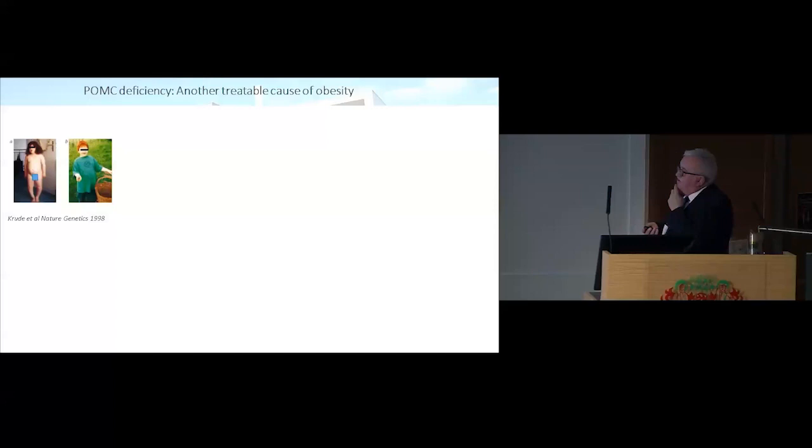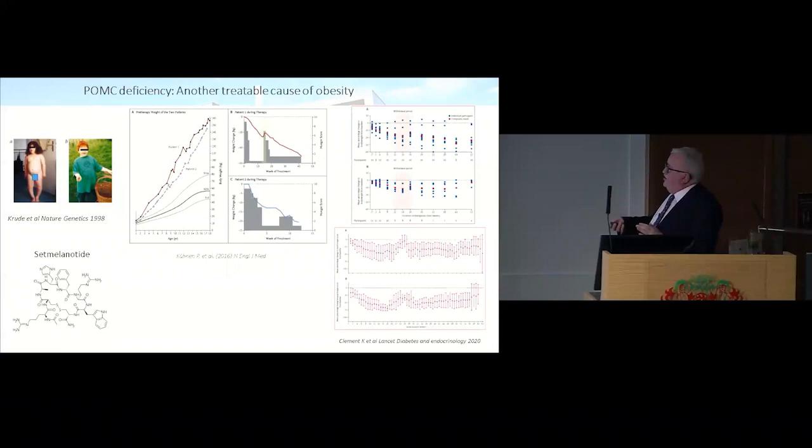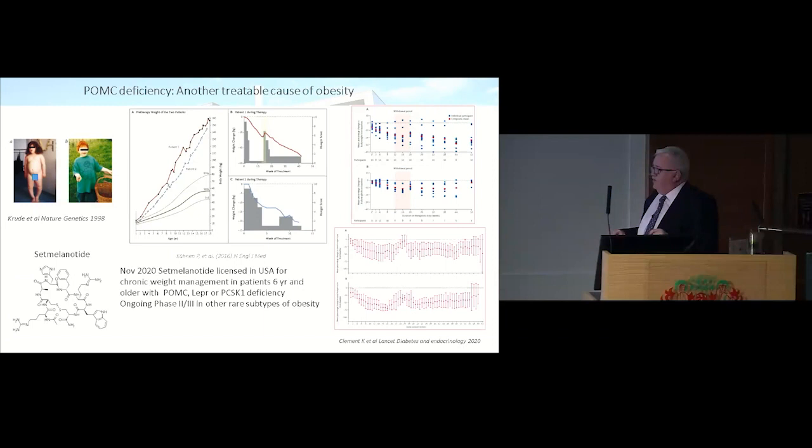Our colleagues in Germany and France, Karine Clément, Heiko Cruda and others discovered deficiency of the next step down, the POMC neurons. Those children also become severely obese. Using an octopeptide analog of melanocortin that binds to the melanocortin-4 receptor, setmelanotide, you give that to the children, they get dramatic therapeutic responses. More recently, they've shown that in a much larger group of patients, you get huge effects on both food intake, appetite scores in the children who lack that signaling molecule. This drug is now licensed for these children with these rare forms of obesity and there are ongoing phase two and three trials.